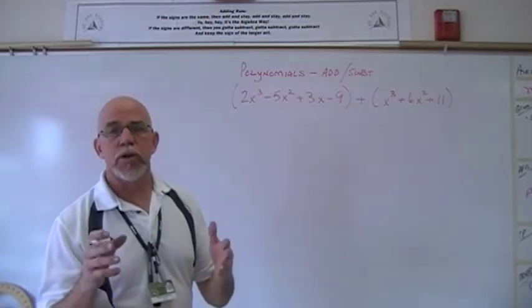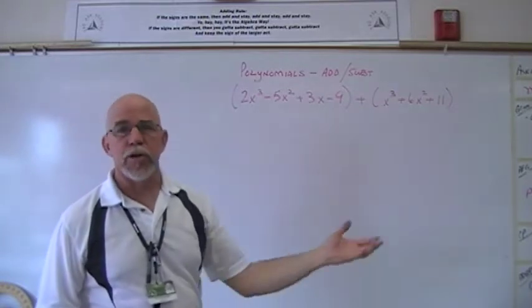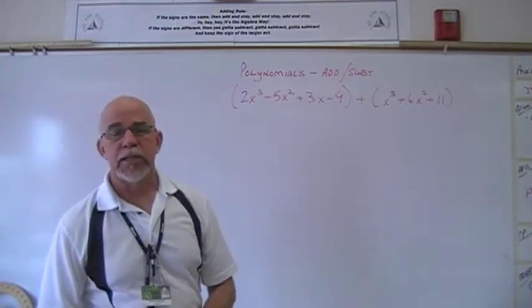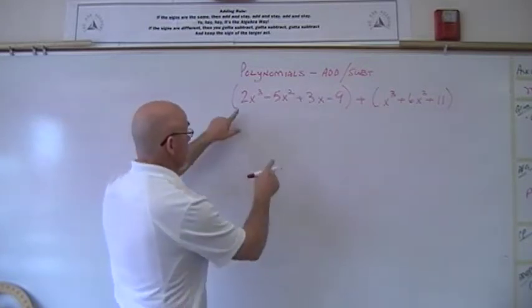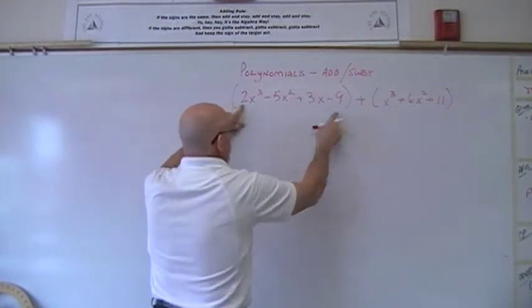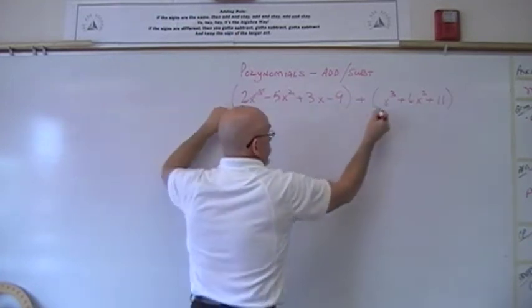Terms that are like x to the third things we're going to add to the x to the third, x to the second terms in the polynomials we're going to find its like term, x to the second, and add those together using our adding rule. So again, this is very simple. We have one x to the third and two x to the third. We add those together. We get three x to the thirds.